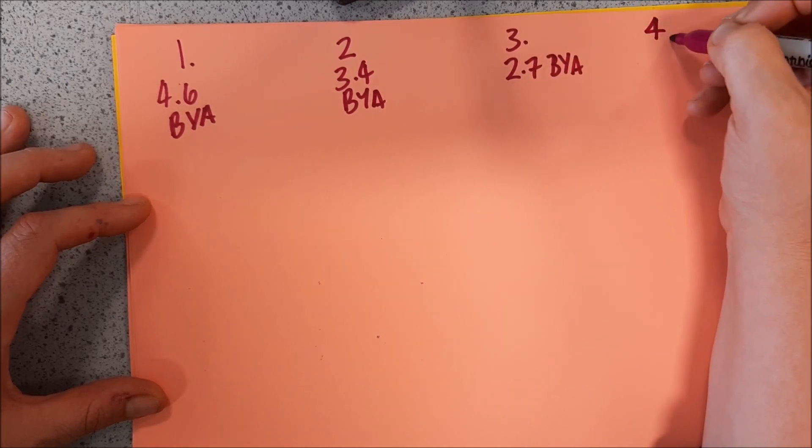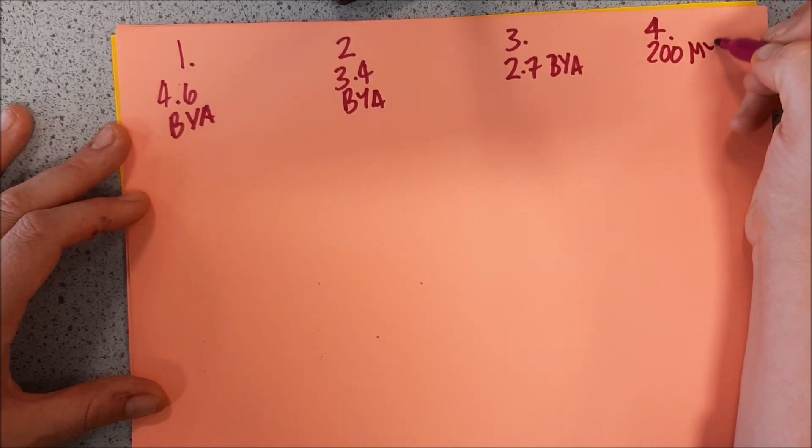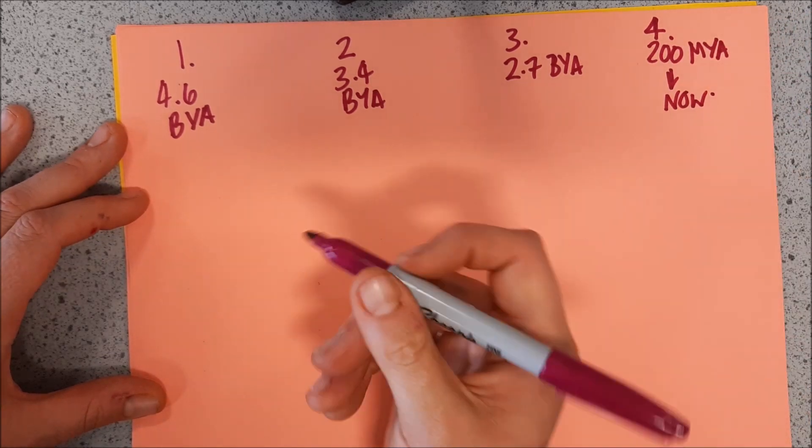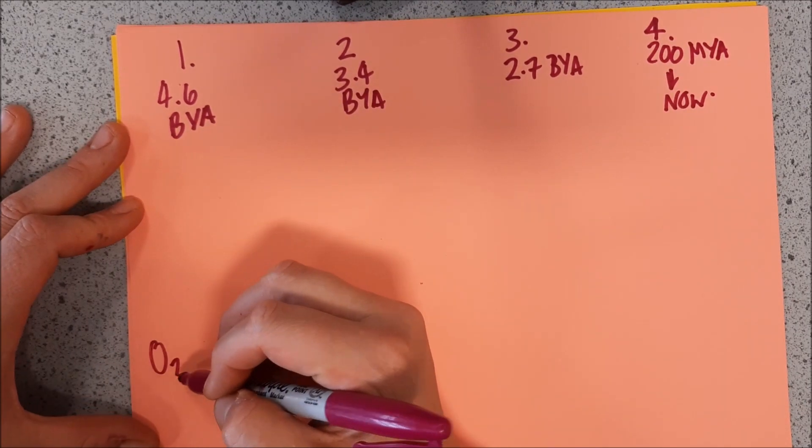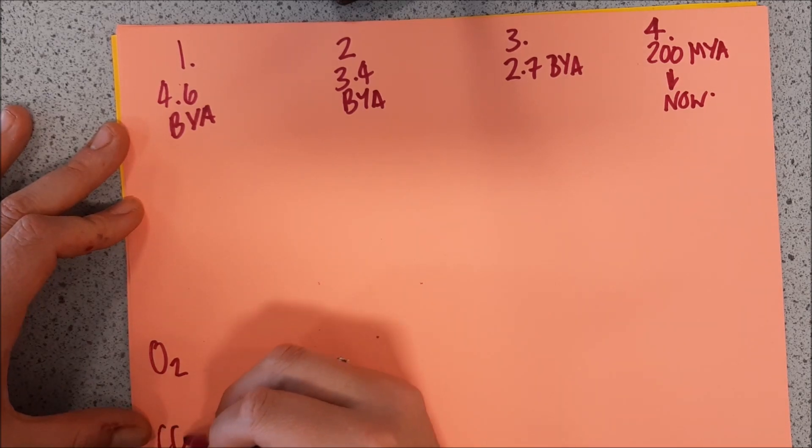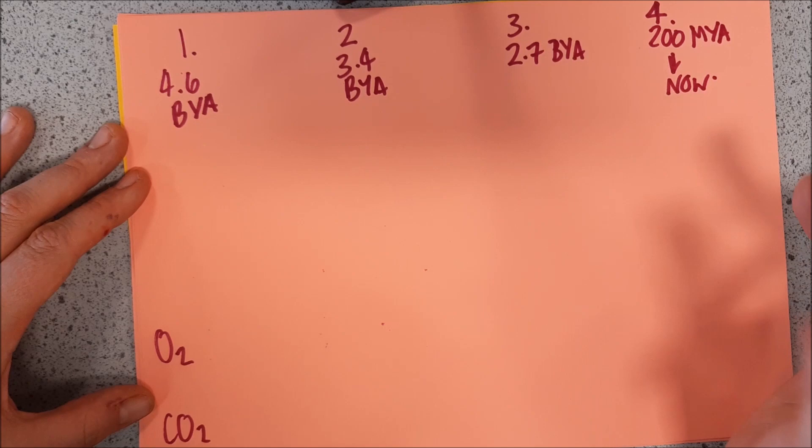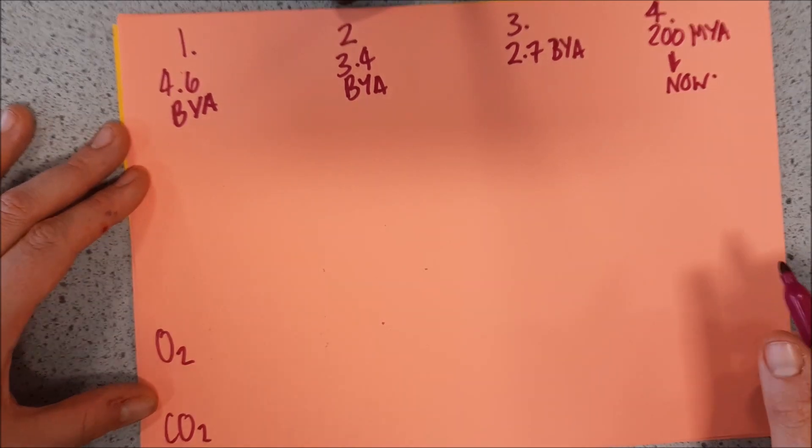And step four is 200 million years ago until now. And what I'm going to do is just sort of a little description here. And then down here, I'm going to talk about what's happening to the oxygen levels and the carbon dioxide levels, because these are the two main gases that we're really interested in because they have the biggest change. Nitrogen also changes, but not in such huge amounts.